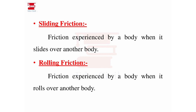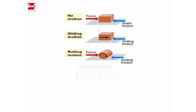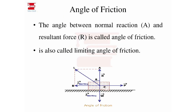Looking at the figure: if the body has no motion it is static friction; if it has a sliding motion it is sliding friction; if it has a rolling motion it is rolling friction. That covers the four types of friction. The next term is the angle of friction. You have a normal reaction to the body and the weight at the bottom.